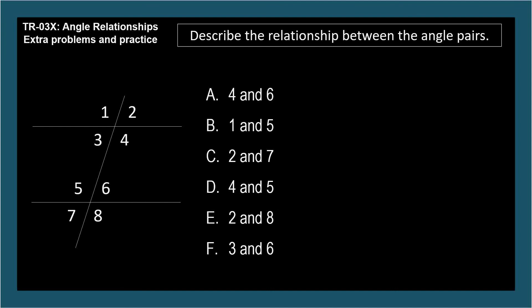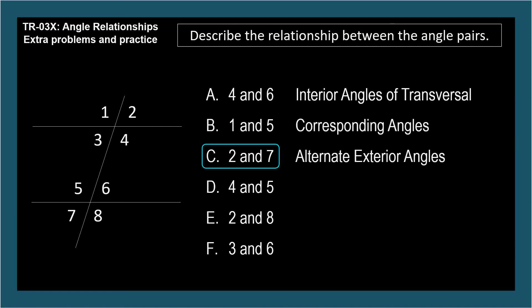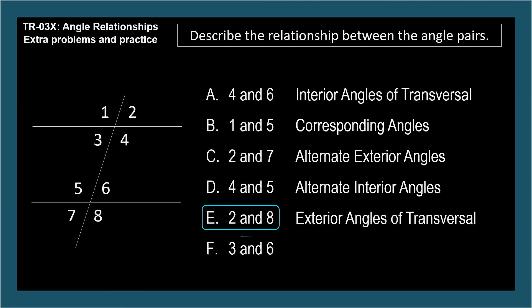Describe the relationship between each angle pair. I'll go one by one so pause as you like. Angles four and six: interior angles of transversal. Angles one and five: corresponding angles. Angles two and seven: alternate exterior angles. Angles four and five: alternate interior angles. Angles two and eight: exterior angles of transversal. Angles three and six: alternate interior angles.